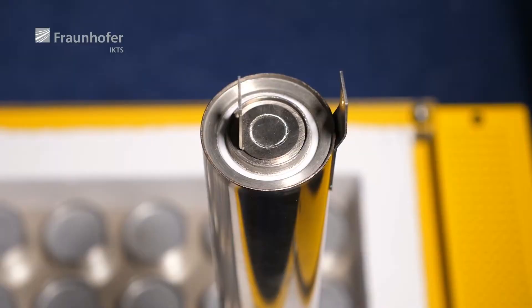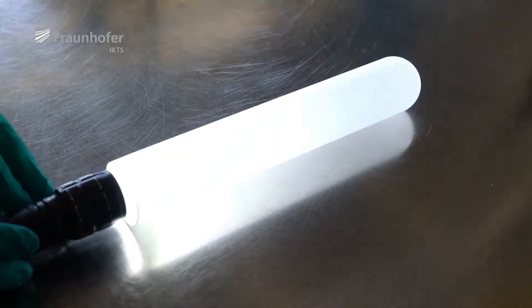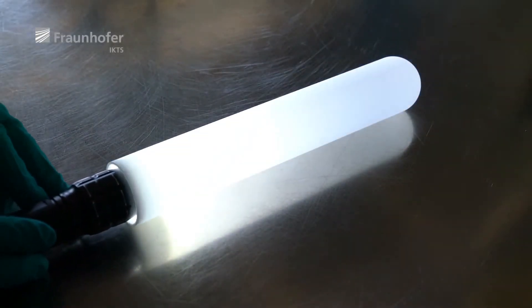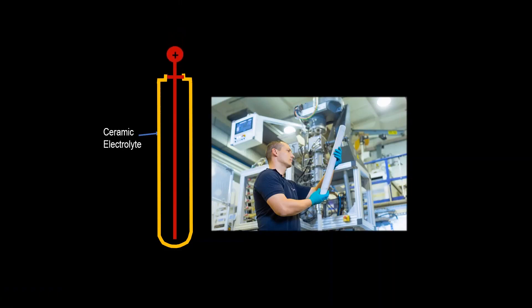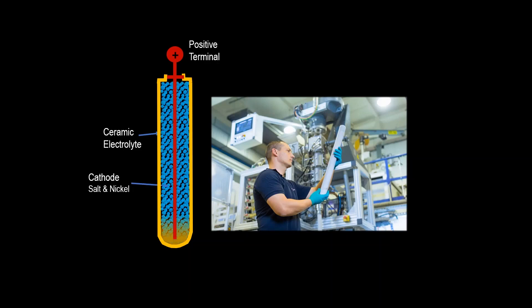So how does this battery work? A SirEnergy battery consists of a ceramic tube with a central positive terminal. The tube is filled with nickel cathode granules and simple table salt before being flooded with sodium alumina chloride medium.